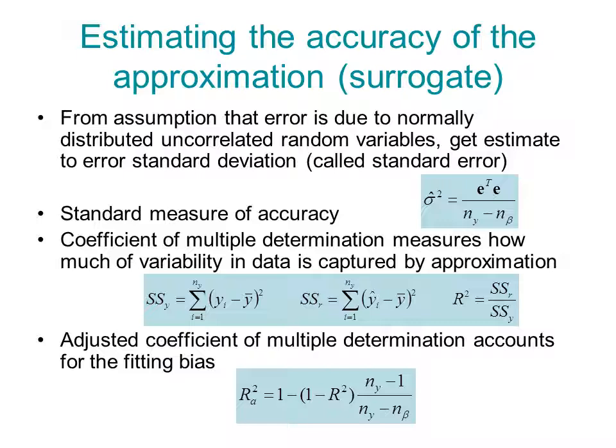If we take the assumptions that we made about the noise being normally distributed and uncorrelated, we can derive an estimate of the standard deviation of the noise, and it's given by sigma hat, or sigma hat square is E transpose E over NY minus N beta, where NY is the number of data points and N beta is the number of coefficients.